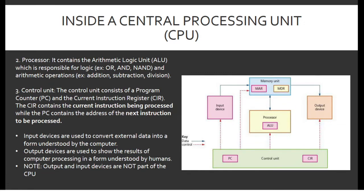The processor contains the arithmetic logic unit (ALU), which is responsible for logic operations such as OR, AND, and NAND, as well as arithmetic operations such as addition, subtraction, division, and multiplication. The control unit consists of a program counter (PC) and the current instruction register (CIR). The CIR contains the current instruction being processed, while the PC contains the address of the next instruction to be processed. Input devices convert external data into a form understood by the computer, while output devices show the results of computer processing in a form understood by humans. Note that input and output devices are not part of the CPU.